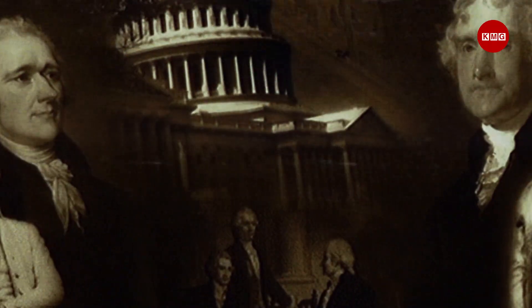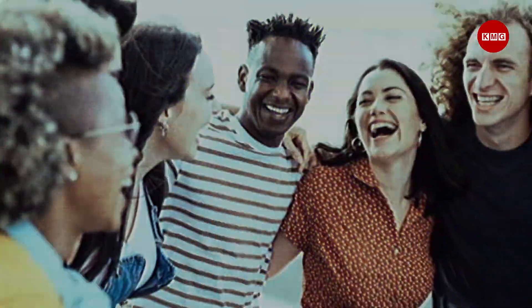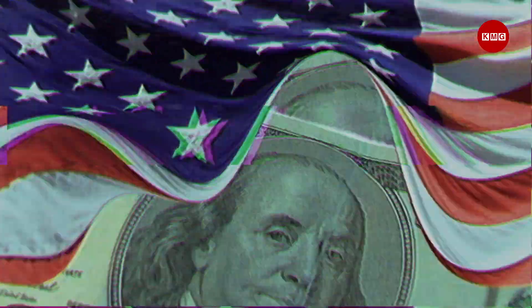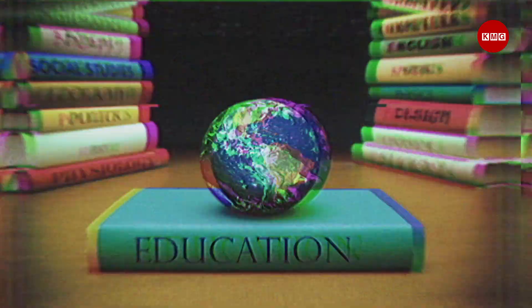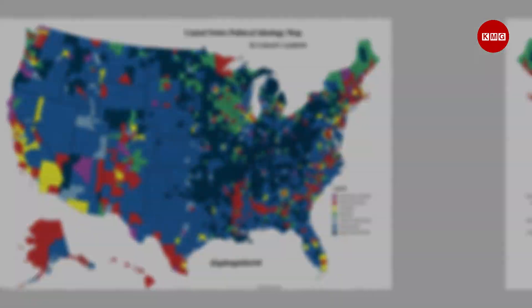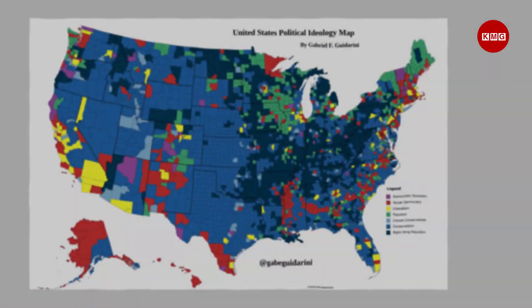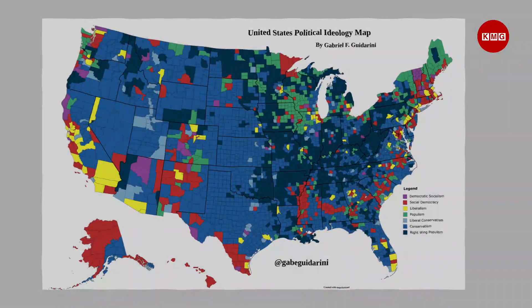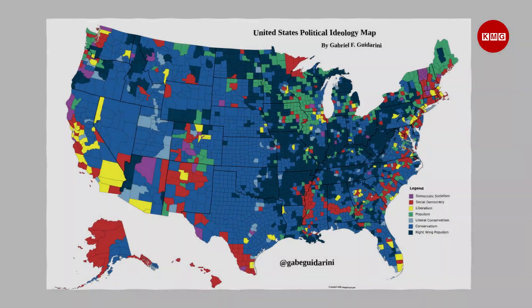In fact, there are many factors that influence how a state leans politically, such as its history, culture, economy, demographics, religion, education, and more. In this video I'm going to show you a map of the United States